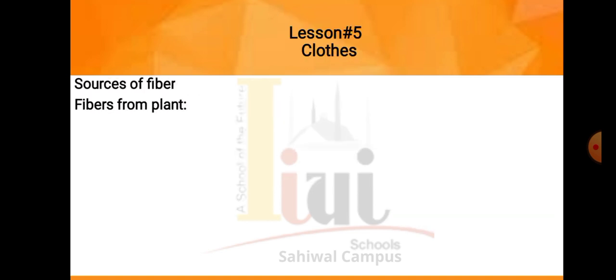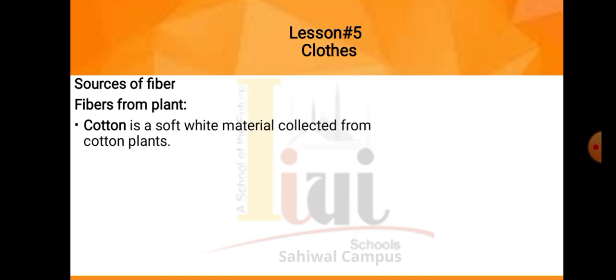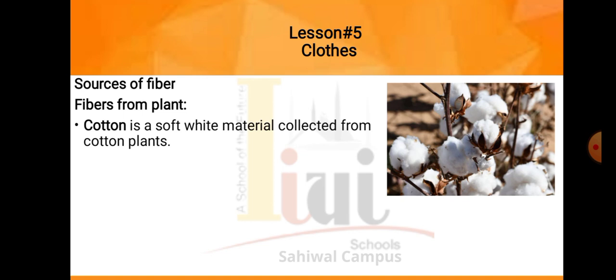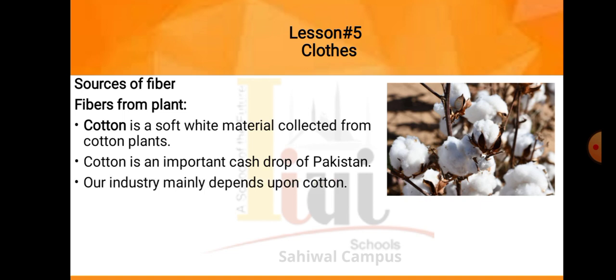Next is sources of fiber — fiber humein kahan kahan se milta hai. Number one is fiber from plant. Cotton is a soft white material collected from cotton plants. Cotton ek soft white material hai jisko hum plant se collect kertay hai, aur yeh plants pe hi grow hoti hai cotton. Cotton is an important cash crop of Pakistan. Our industry mainly depends on cotton. Hamari jo fiber industry hai, wo bahut zyada cotton per dependent hai, kyunke cotton se hi hum log thread hasil kertay hai, aur thread se onward hum log fabric binaatay hai, clothes binaatay hai.